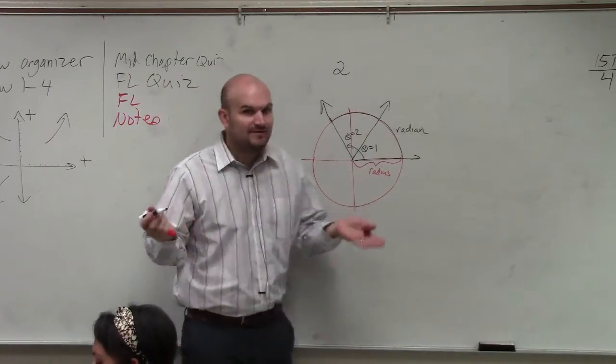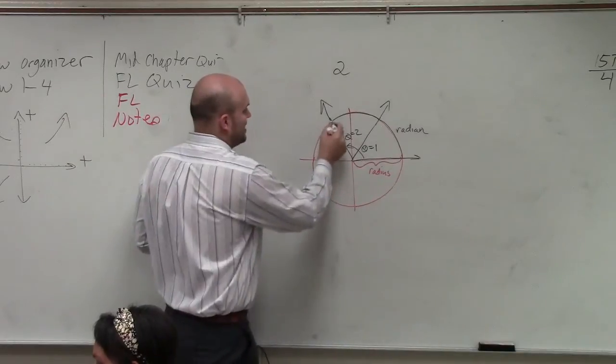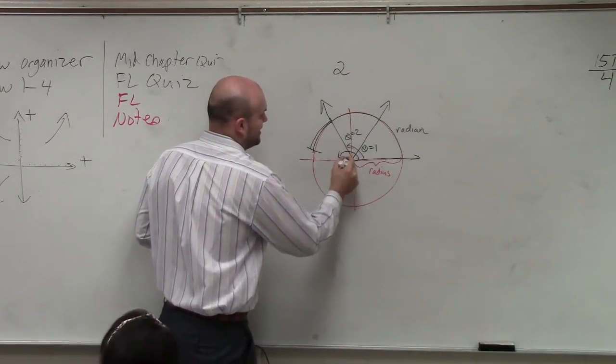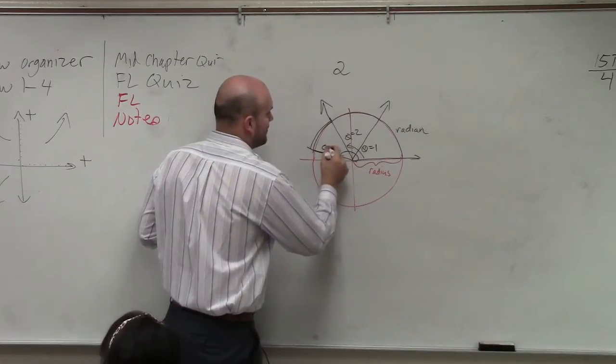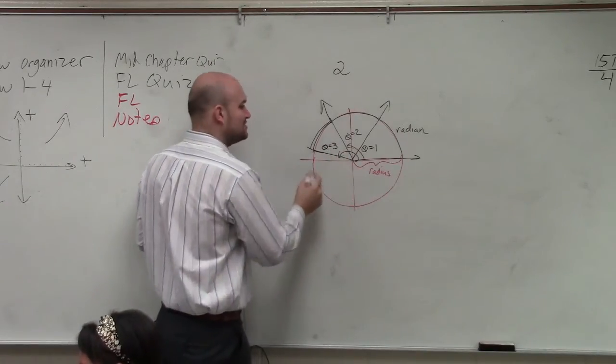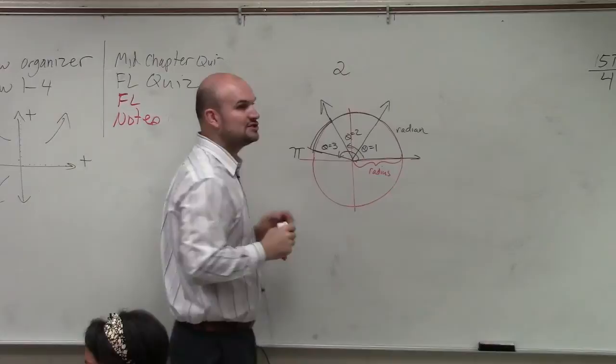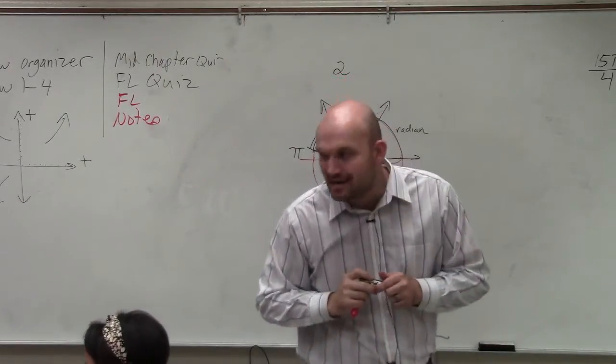And then how did we even come up with pi? Well, we added another one, and we said from here to here was 3 radians. So therefore, all the way around a circle was pi radians.